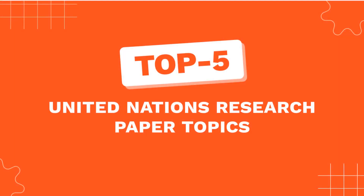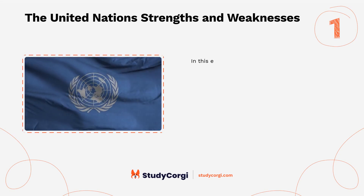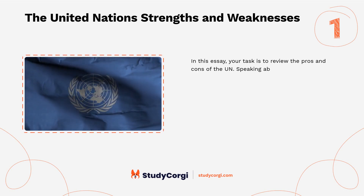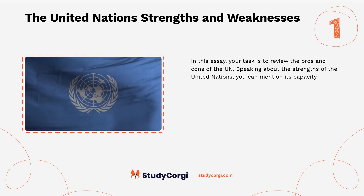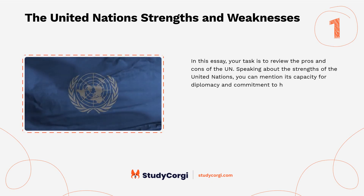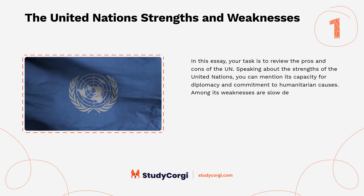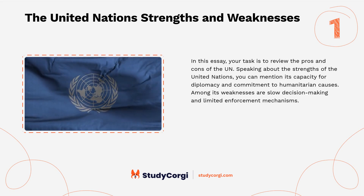Top five United Nations research paper topics. The United Nations strengths and weaknesses: in this essay your task is to review the pros and cons of the UN. Speaking about the strengths of the United Nations, you can mention its capacity for diplomacy and commitment to humanitarian causes. Among its weaknesses are slow decision-making and limited enforcement mechanisms.